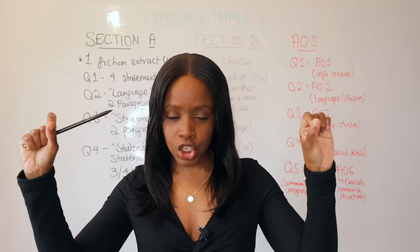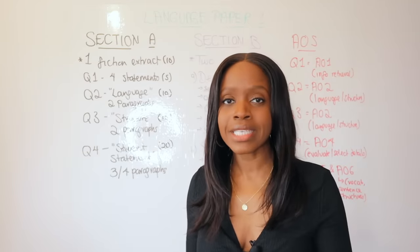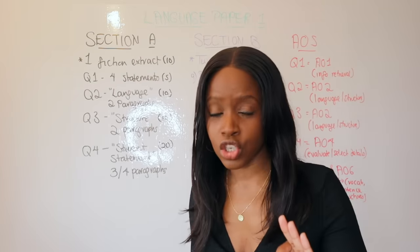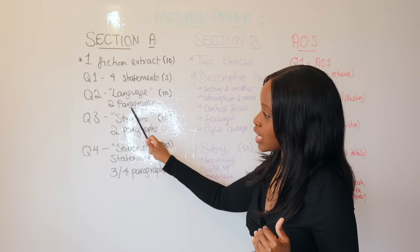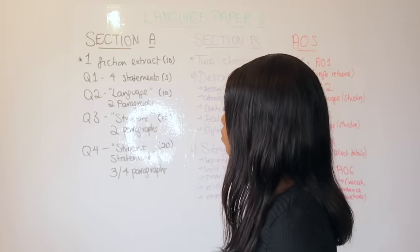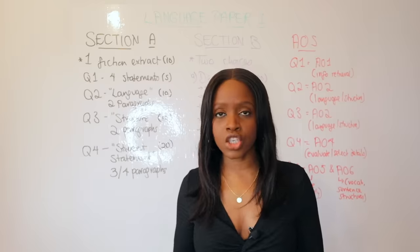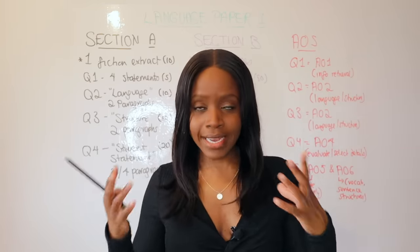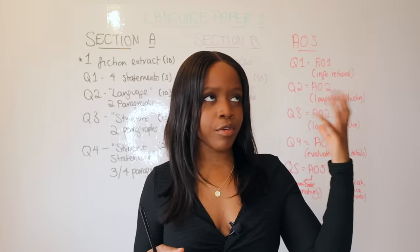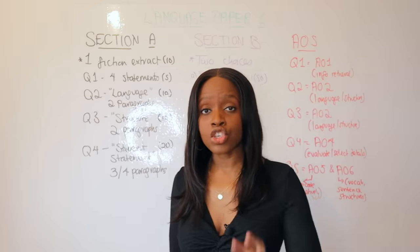Question 2 is the language question. You're given a section from the text in a box, so you don't have to flick back to the insert, and you're asked how the writer uses language to convey whatever you're asked to look at. Spend at least 10 minutes on this question and split that into five minutes per paragraph. Aim to write at least two PEEL paragraphs - Point, Evidence, Explanation, and Link. Language refers to things like alliteration, metaphor, onomatopoeia, simile, and advanced techniques such as semantic fields or extended metaphors.